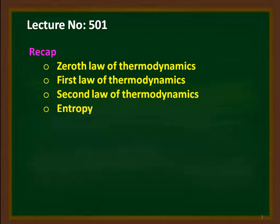We recap from the previous lecture. In the previous four modules, we discussed the zeroth law of thermodynamics, first law of thermodynamics, and the application of the first law to open systems and closed systems. We solved problems on the steady flow energy equation and various thermodynamic properties. We also studied the second law of thermodynamics, heat engines, refrigerators, heat pumps, entropy, and entropy calculations for various processes.